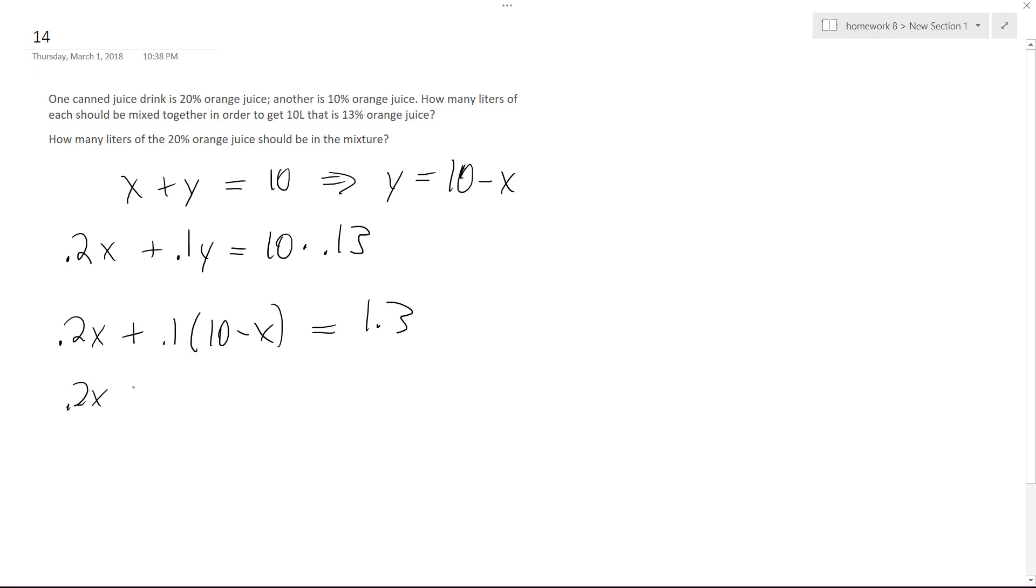So we get .2X plus .1 minus .1X is equal to 1.3. Minus .1, and we get .1X is equal to 1.2 divided by .1, we get .2X is equal to 12, this is equal to 12 liters, or not 12 liters. I just realized I made a big mistake.